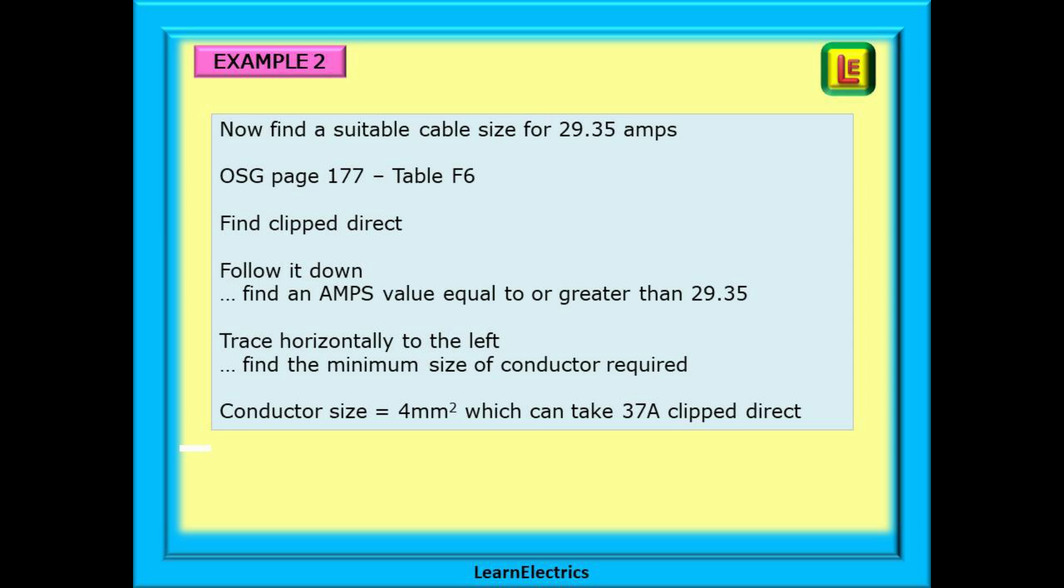Now find a suitable cable size for 29.35 amps. Look in the on-site guide on page 177 at table F6, find clipped direct, follow it down, find an amps value equal to or greater than 29.35 and trace horizontally to the left and you will find the minimum size of conductor required. In this case, the conductor size is 4mm which can take 37 amps clipped direct. Our chosen cable should be 4mm twin and earth.